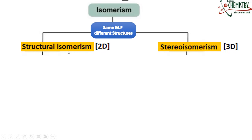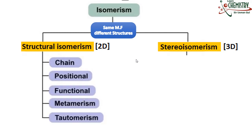When we talk about the types of structural isomerism, there are many types but in this lesson I will only explain five types. These are: number one is chain isomerism, the second type is positional isomerism, third type is functional group isomerism, fourth is metamerism, and the fifth is tautomerism.